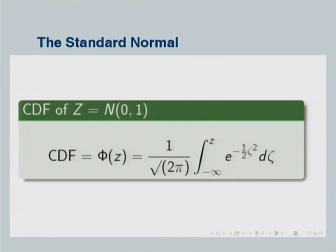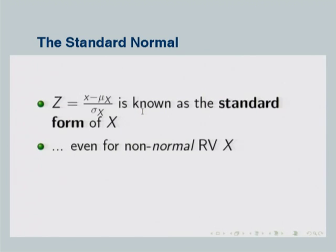The standard normal random variable is a special case of the normal random variable where the mean is 0, the standard deviation is 1, and therefore the variance is also equal to 1. In general, for any continuous random variable, we can define a standard form: x minus the mean of x, divided by sigma — the standard deviation of x.